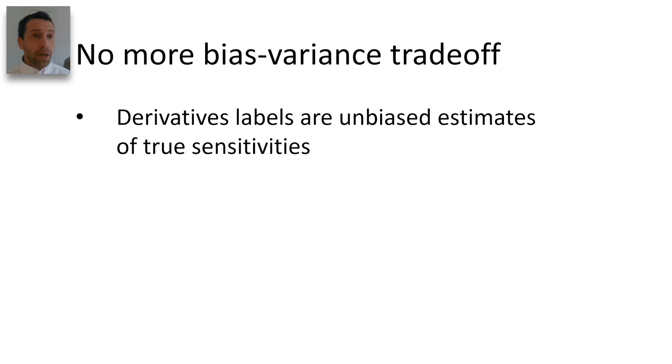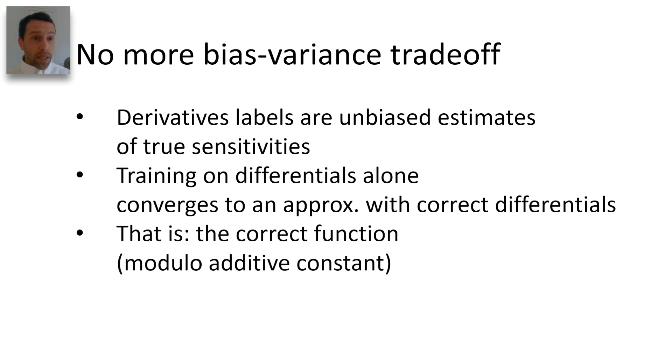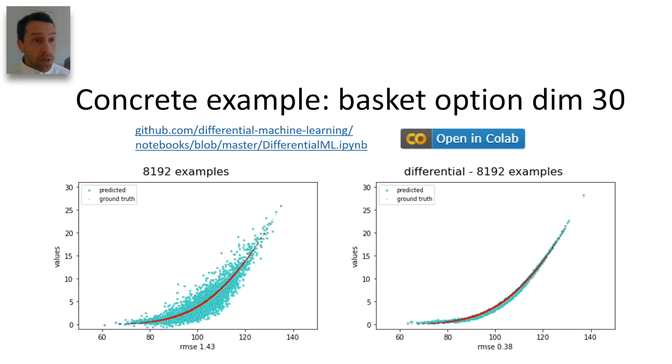Hence, it doesn't have a bias-variance tradeoff. Differential labels are unbiased estimates of true sensitivities. Hence, training on differentials alone converges to an approximation with all the correct sensitivities. That is, the correct function, modulo an additive constant.